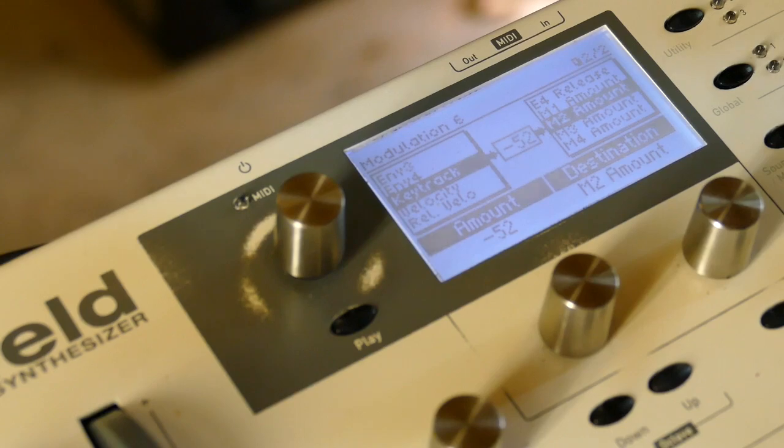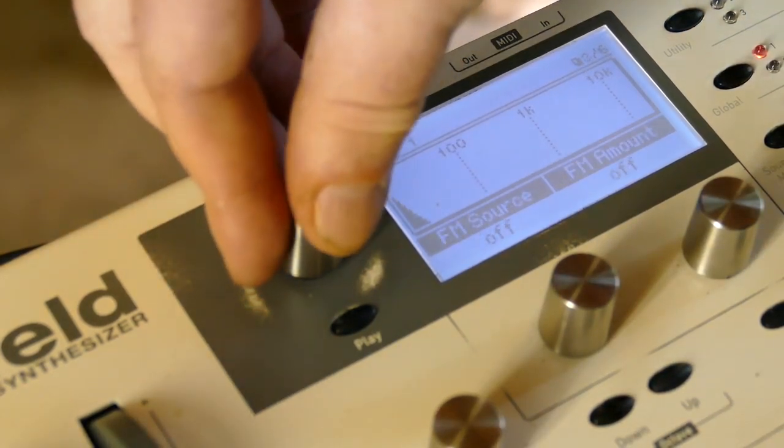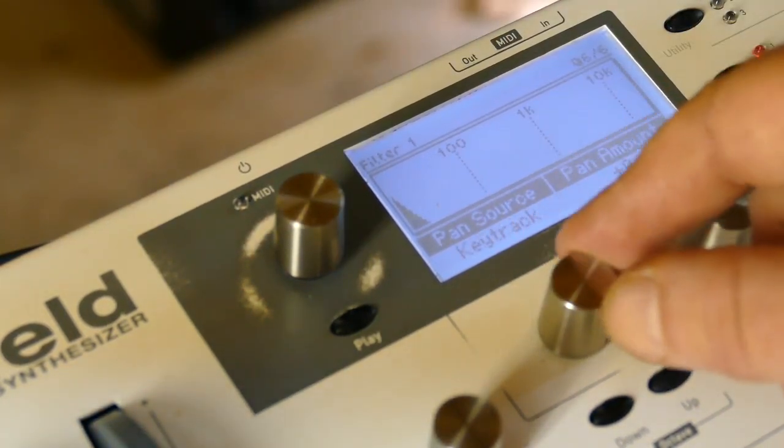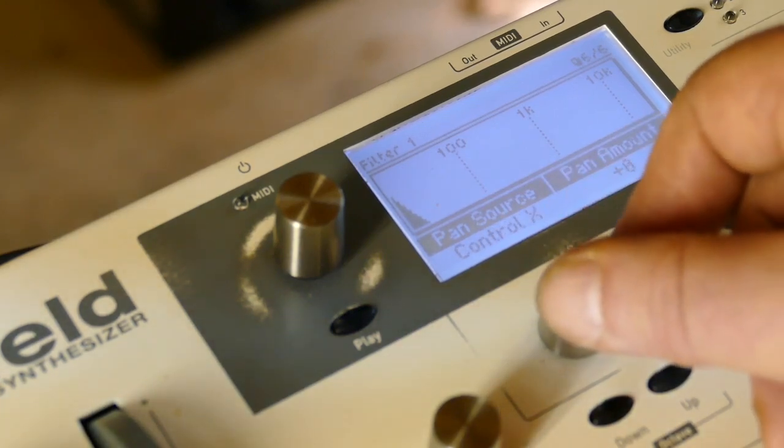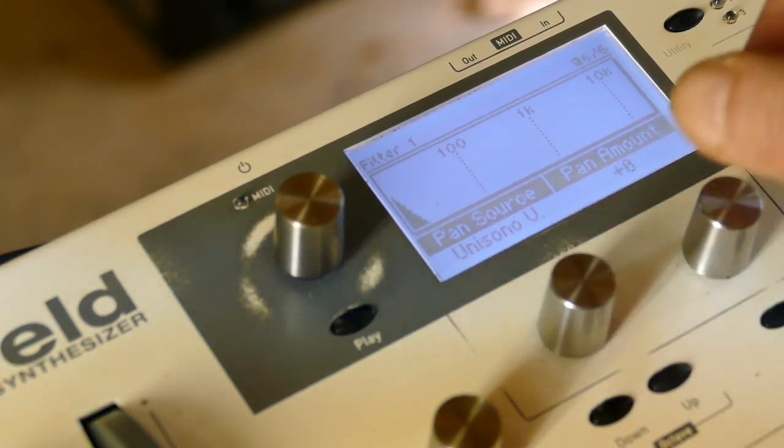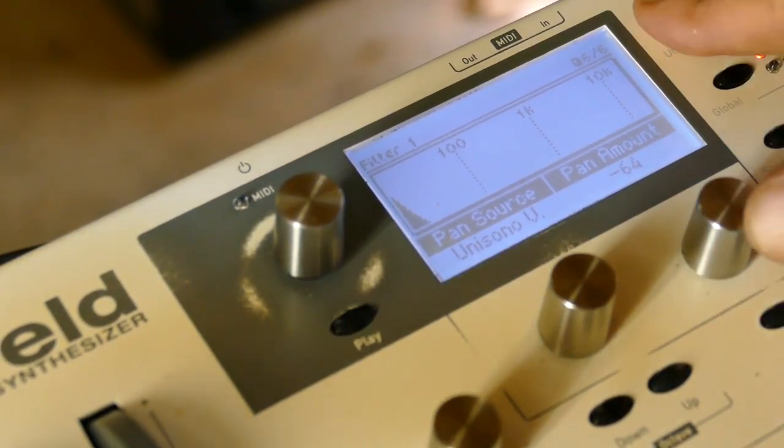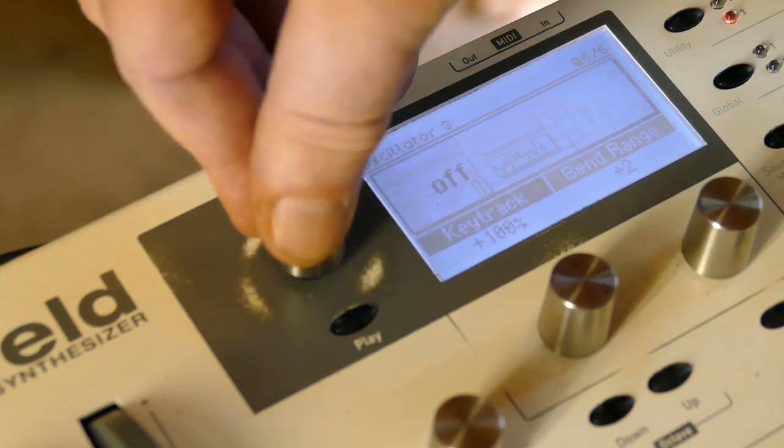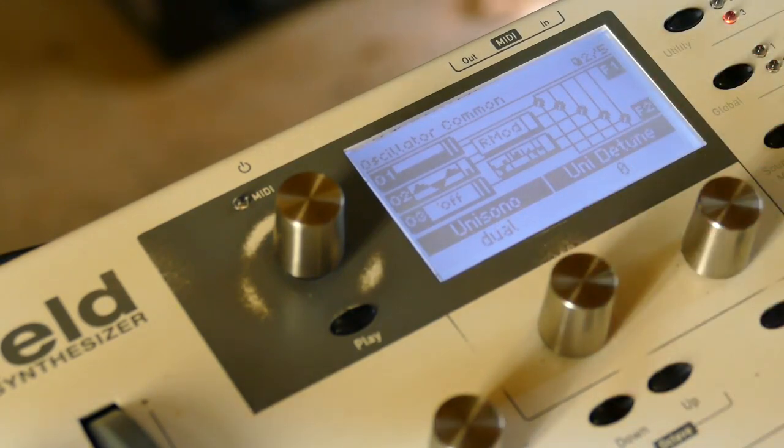Let's stereo-ify it. Go to filter one, take pan and set it to unison. Take the pan amount. On the oscillator common page, I'm going to set unison to 2. I'm going to leave the detune to 0 because I'm going to be bringing my pitch in a different way.